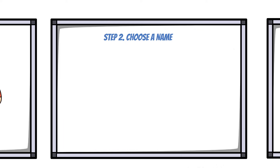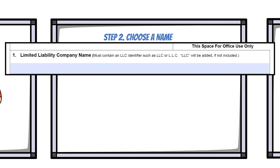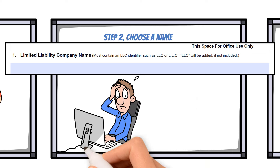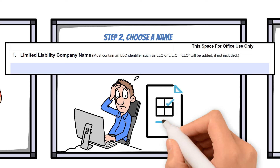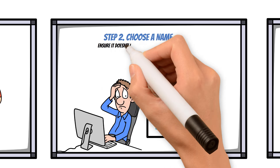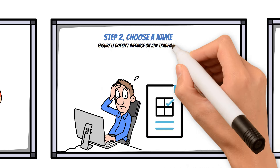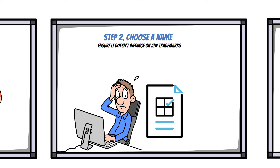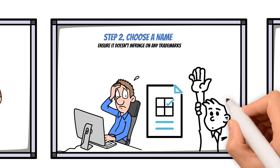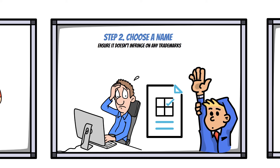Step 2: Choose a Name. Selecting a unique name that complies with your state's guidelines is crucial. Ensure it doesn't infringe on any trademarks and includes 'Limited Liability Company' or an appropriate abbreviation.